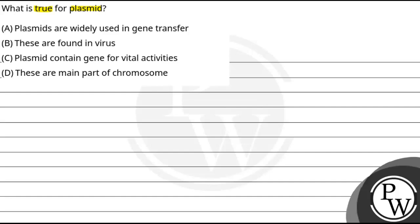Option A states that plasmids are widely used in gene transfer. B says these are found in viruses. C states that plasmids contain genes for vital activities, and D says these are the main part of the chromosome.